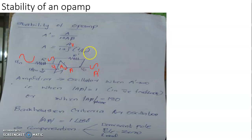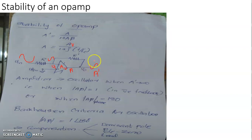A is a parameter that strictly depends on frequency, and A can have a phase difference of 180 degrees if there are two poles in the transfer function. The inverting amplifier already introduces a phase shift of 180 degrees. Combined with the additional 180-degree phase shift from two poles, the feedback signal ends up in phase with the input — the negative feedback is converted into positive feedback.